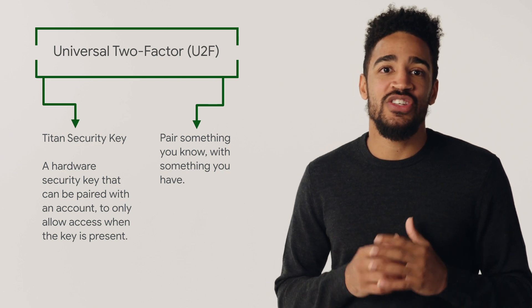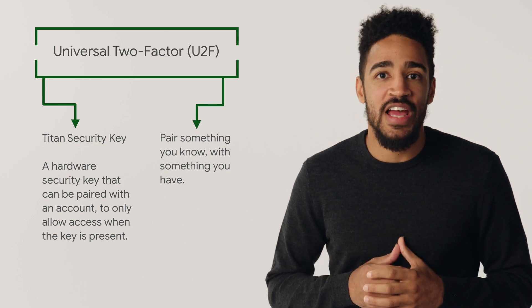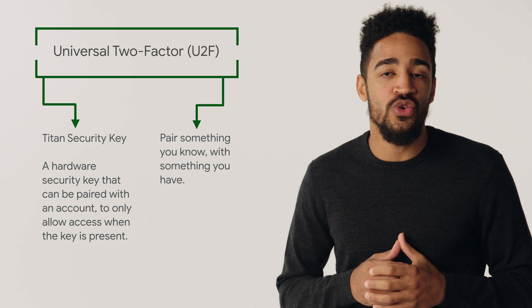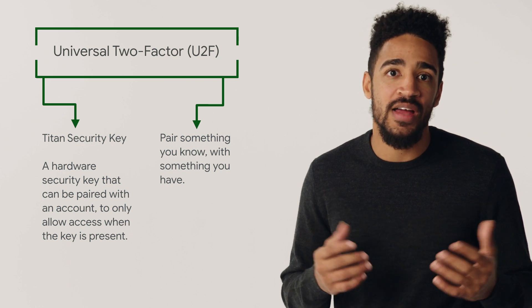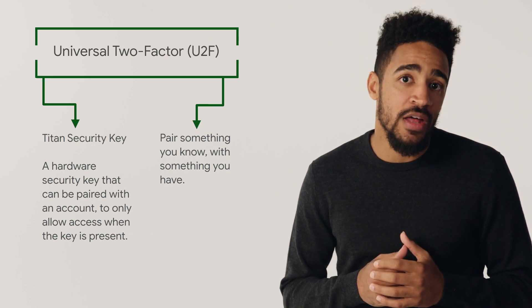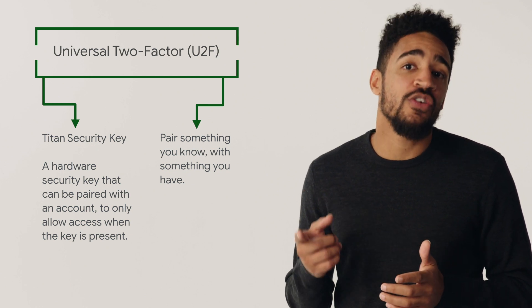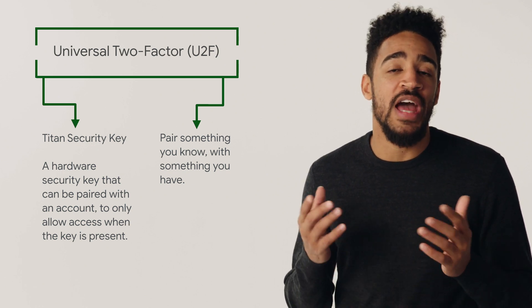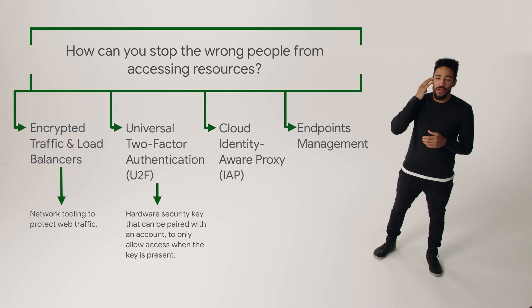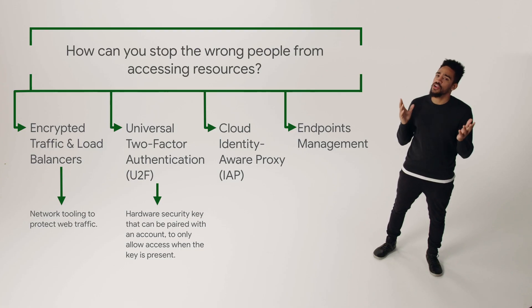Once you set these keys up and change the two-step authentication to only use security keys in the Google Admin UI, then the next time a developer logs on, after they enter their password, they'll be asked to touch their security key. How else can we limit unauthorized access?